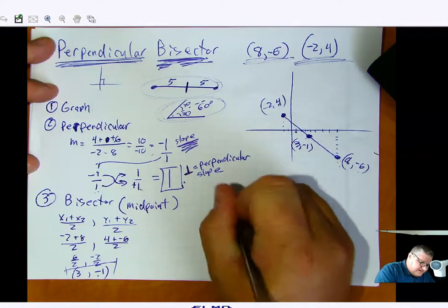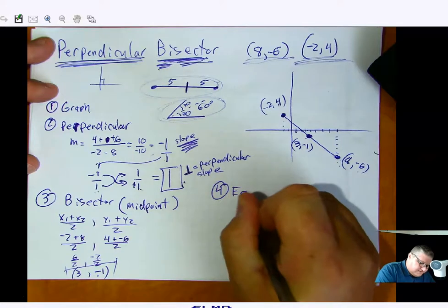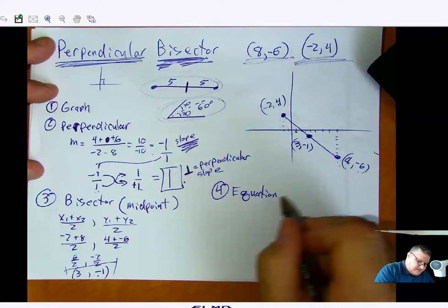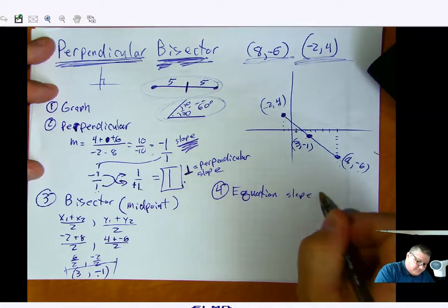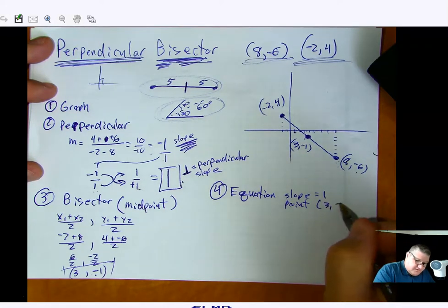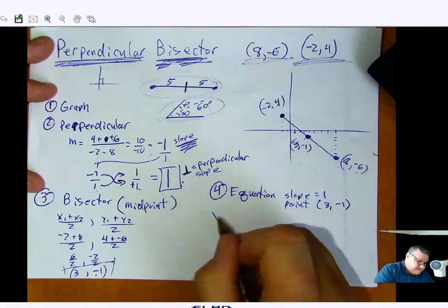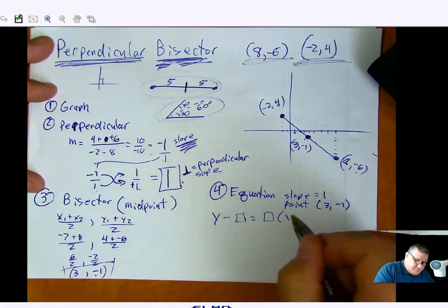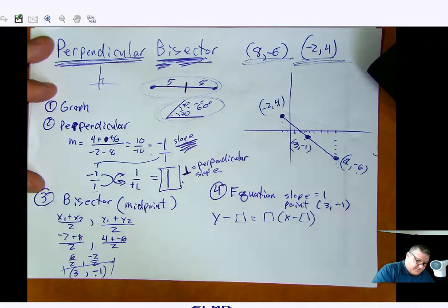Now all I need is the equation. Well, wait a minute, folks. We already know how to do this. We have a slope. We have a point. And so if I have a slope and a point, well, gee, that sounds like a perfect opportunity for point-slope form.